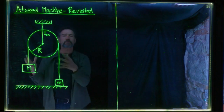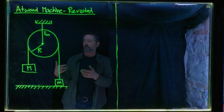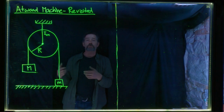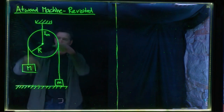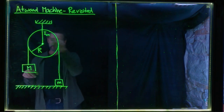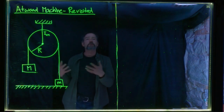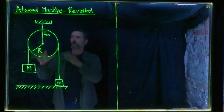We're going to revisit this Atwood machine, which we considered before from the point of view of dynamics. Now we're going to consider it from the point of view of energy — conservation of energy, where delta E total equals zero. The total energy in an isolated system never changes. We'll also look at it from the point of view of energy transfer: how gravitational energy comes in, kinetic energy goes into each part. And we're also going to look at it from the point of view of power — the rate at which energy is flowing in various places in this system.